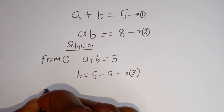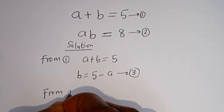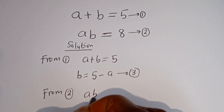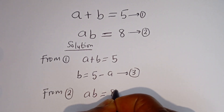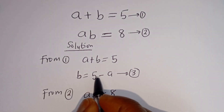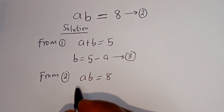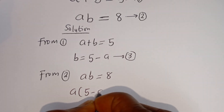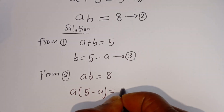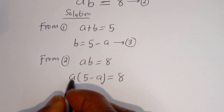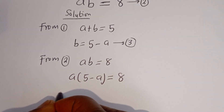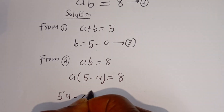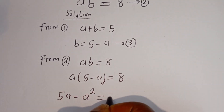Also from equation 2, let's substitute for B. Equation 2 is A times B is equal to 8. Then when B is equal to 5 minus A, we have A times (5 minus A) is equal to 8. Let's open the bracket: A multiplied by 5 is 5A, minus A multiplied by A, which is A squared, is equal to 8.